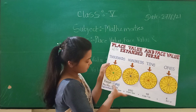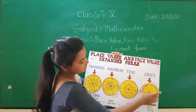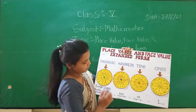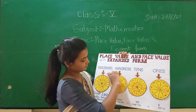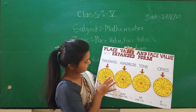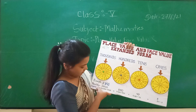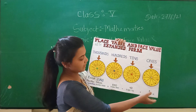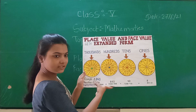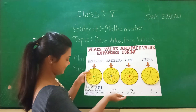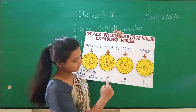Now let us see the example: 3849. The place value of 9 is 9. The place value of 4 is 40. The place value of 8 is 800. And the place value of 3 is 3000. The expanded form of this example is 3000 plus 800 plus 40 plus 9.